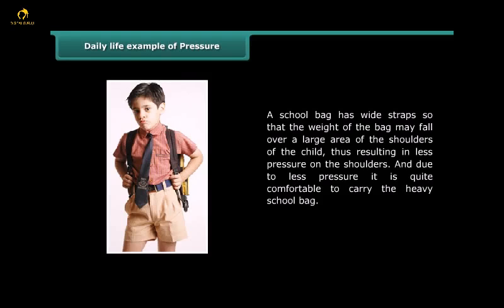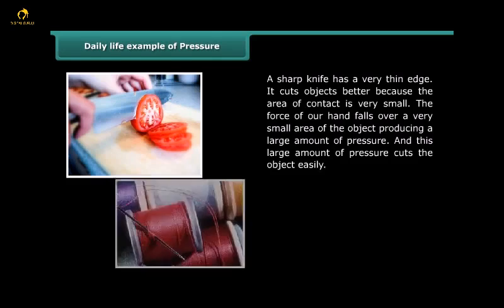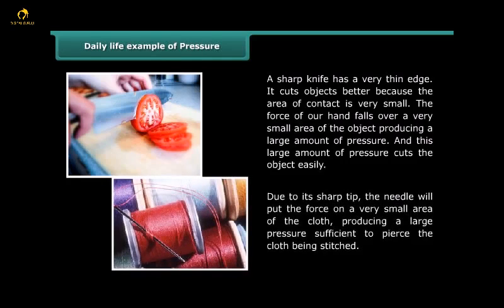A sharp knife has a very thin edge. It cuts objects better because the area of contact is very small. The force of our hand falls over a very small area of the object, producing a large amount of pressure, and this large amount of pressure cuts the object easily. Due to its sharp tip, the needle will put the force on a very small area of the cloth, producing a large pressure sufficient to pierce the cloth being stitched.